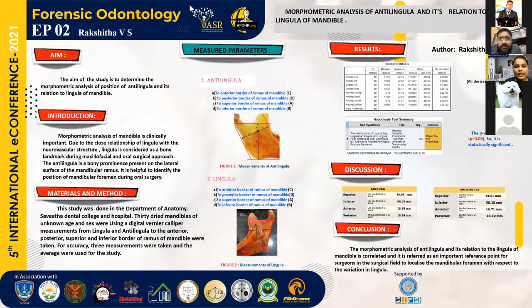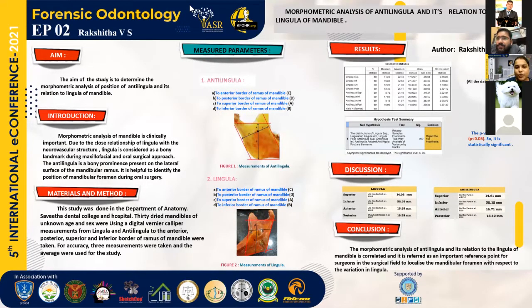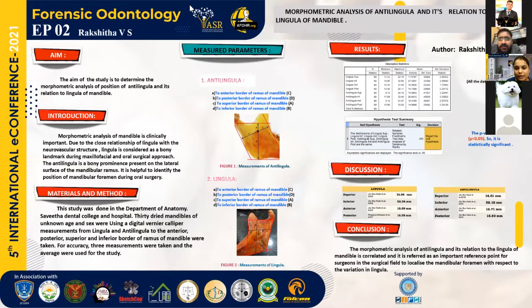You can see in the picture the measurement parameters for antilinguella. From the antilinguella, I calculated the distance to the anterior border of the ramus of mandible, to the posterior border of the ramus of mandible, to the superior border of the ramus of mandible, and to the inferior border of the ramus of mandible.